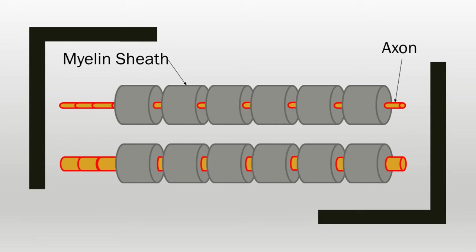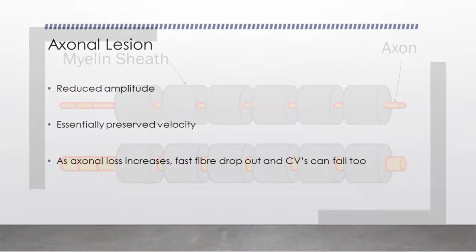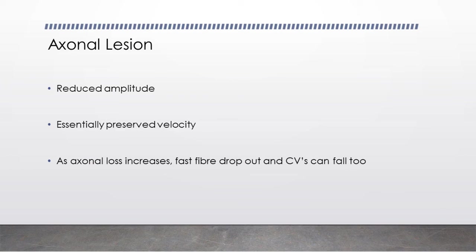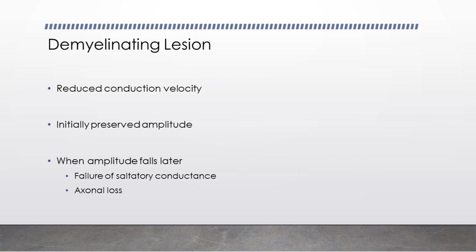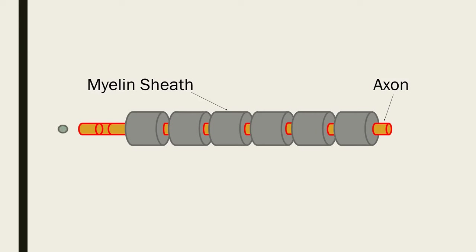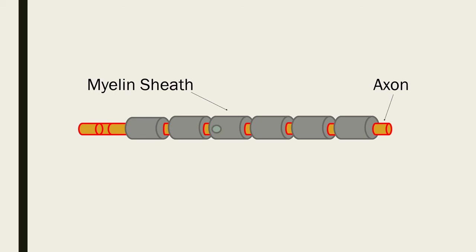In axonal loss, one expects a reduction in amplitude with essentially preserved velocity. As axonal loss increases, fast fibre dropout occurs and conduction velocities can fall too. In a demyelinating lesion, there is primarily a reduction in conduction velocity; amplitudes are initially preserved but can fall later due to failure of saltatory conductance or actual axonal loss. Diffuse loss of myelin produces fairly uniform slowing, as seen in conditions such as Charcot-Marie-Tooth disease, which has a predominantly demyelinating phenotype.